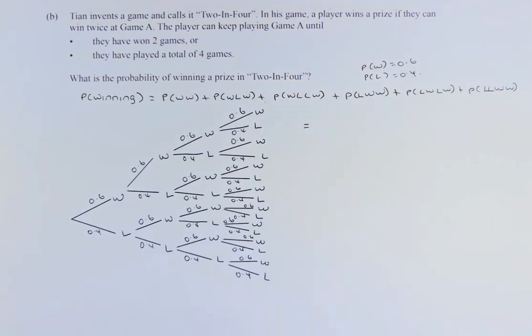TN invents a game and calls it Two-in-Four. In this game, a player wins a prize if they can win twice at Game A. The player can keep playing Game A until they have won 2 games or they have played a total of 4 games. So he must get 2 wins in 4 games played to win the prize. If after 4 tries he did not get 2 wins, then he will lose the game. What is the probability of winning a prize in Two-in-Four?